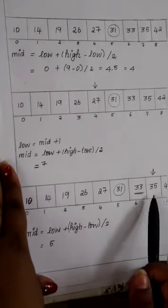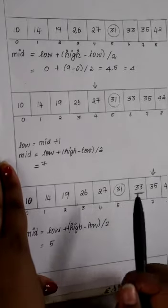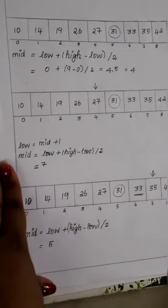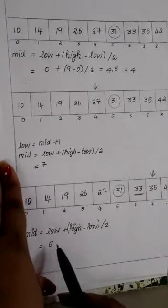We compare the value stored at location 7, which is 35. It is more than what we are looking for, so the value must be in the lower part from this location. Hence we calculate the mid again.